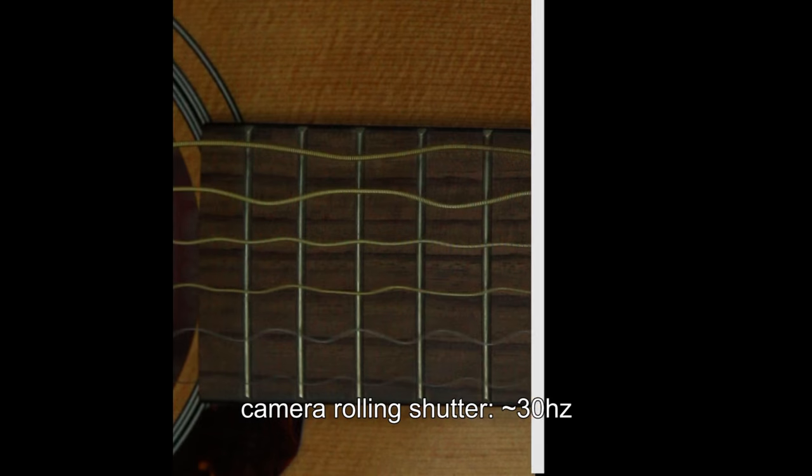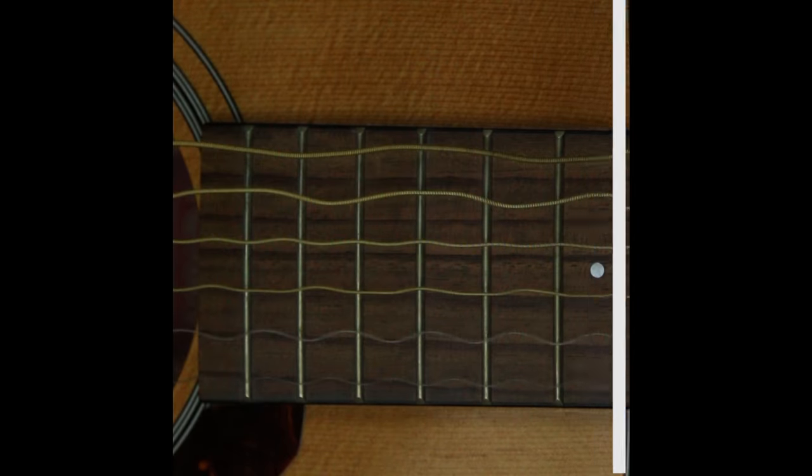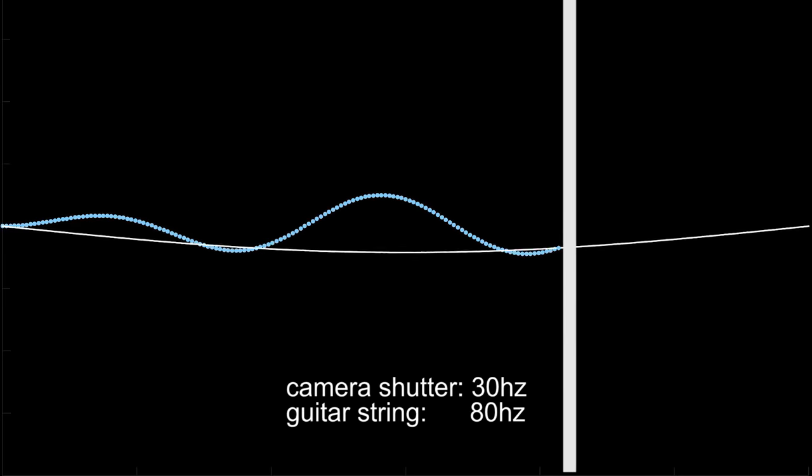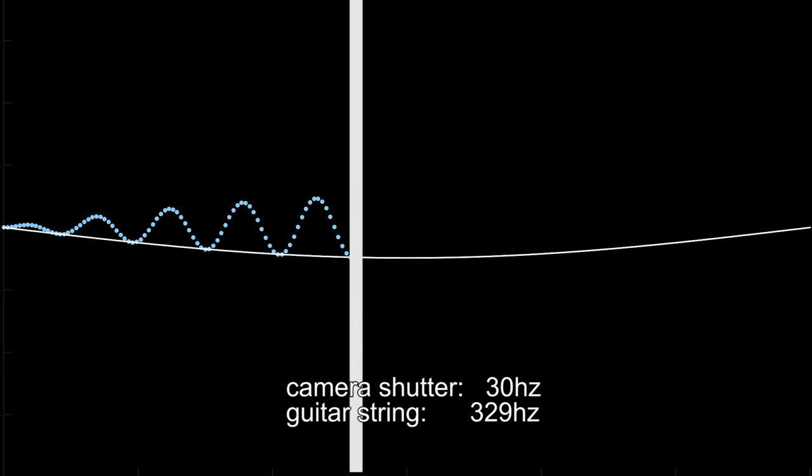The wave effect that we see is the result of how the camera's sensor forms each frame. Instead of taking snapshots, the camera progressively scans the data across the sensor. Since the scanning frequency and vibrational frequencies are mismatched, this can lead to the appearance of standing waves.